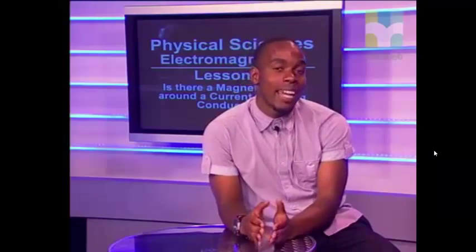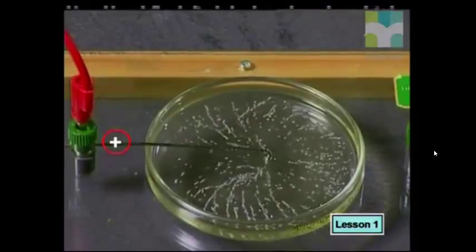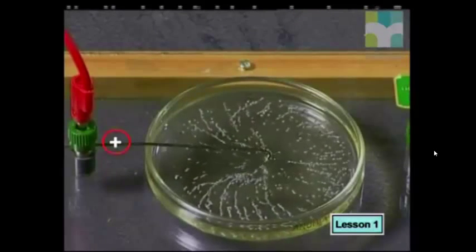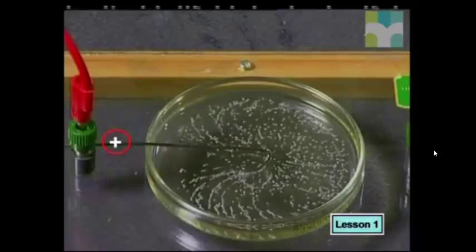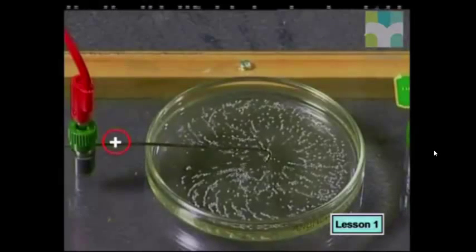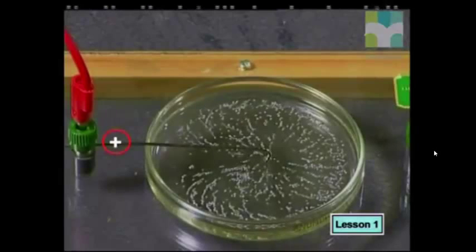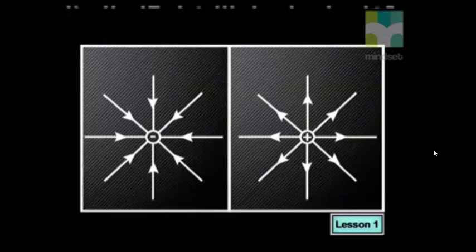In electrostatics, we learned that there is a field around a point charge. This field is known as the electric field. Let's get Kiki to show us that again. When a positively charged metal conductor is placed in a flat dish of oil containing small seeds, the seeds spread out to show the electrostatic force field pattern. This is because the seeds are insulators which can hold a charge, and because they are charged, the seeds experience a force due to the electrostatic force field.